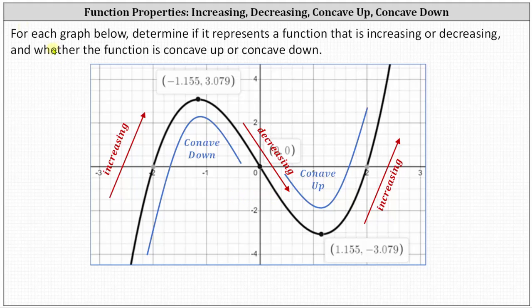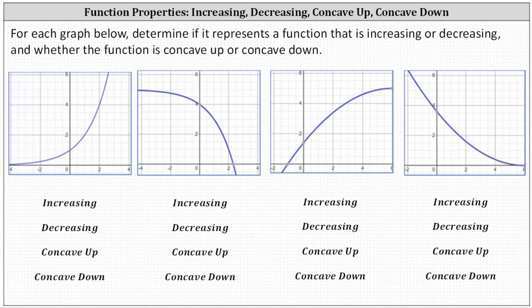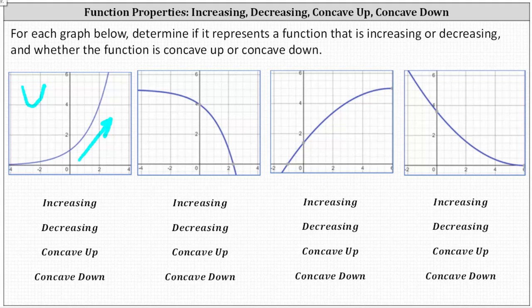Now going back to our problem, let's analyze the four functions. Looking at the first graph from left to right, the graph is going uphill, which indicates the function is increasing. The graph is also in the shape of the right side of an upward-facing cup, indicating the function is concave up. So the first function is increasing and concave up.